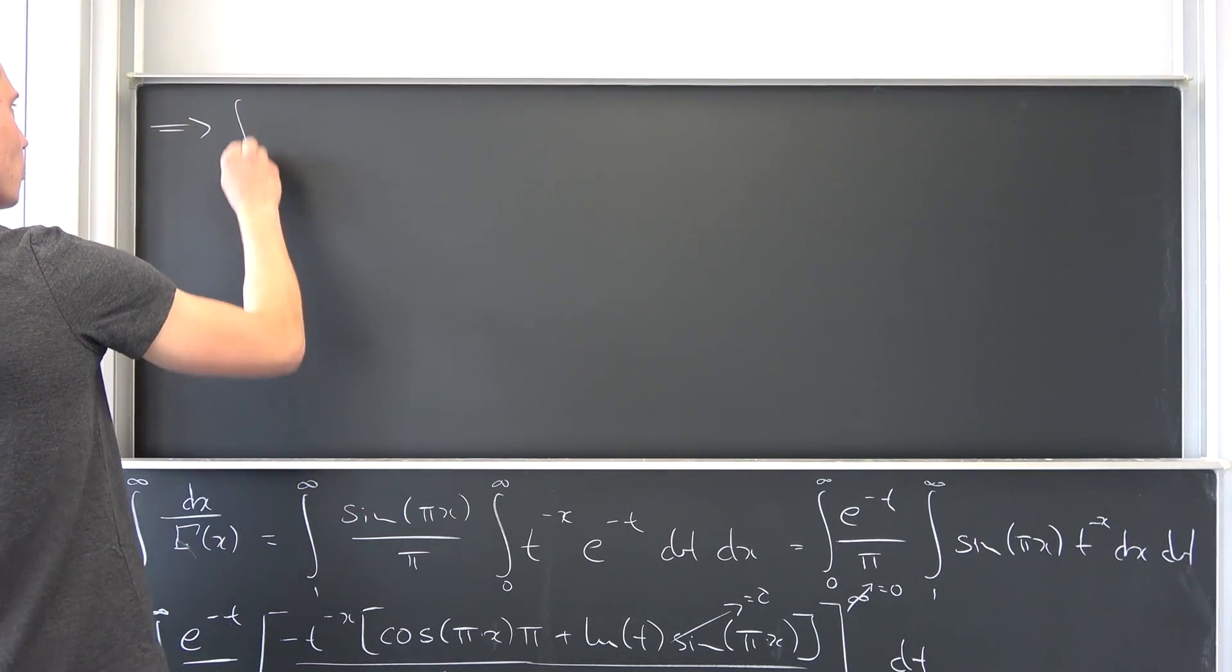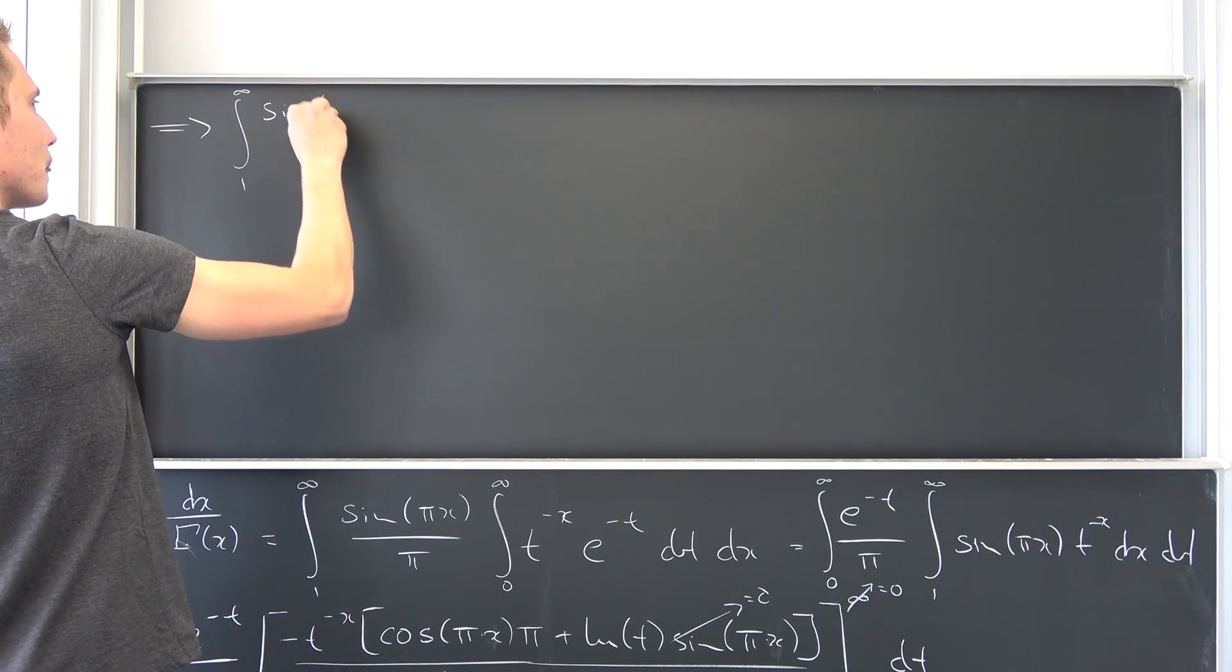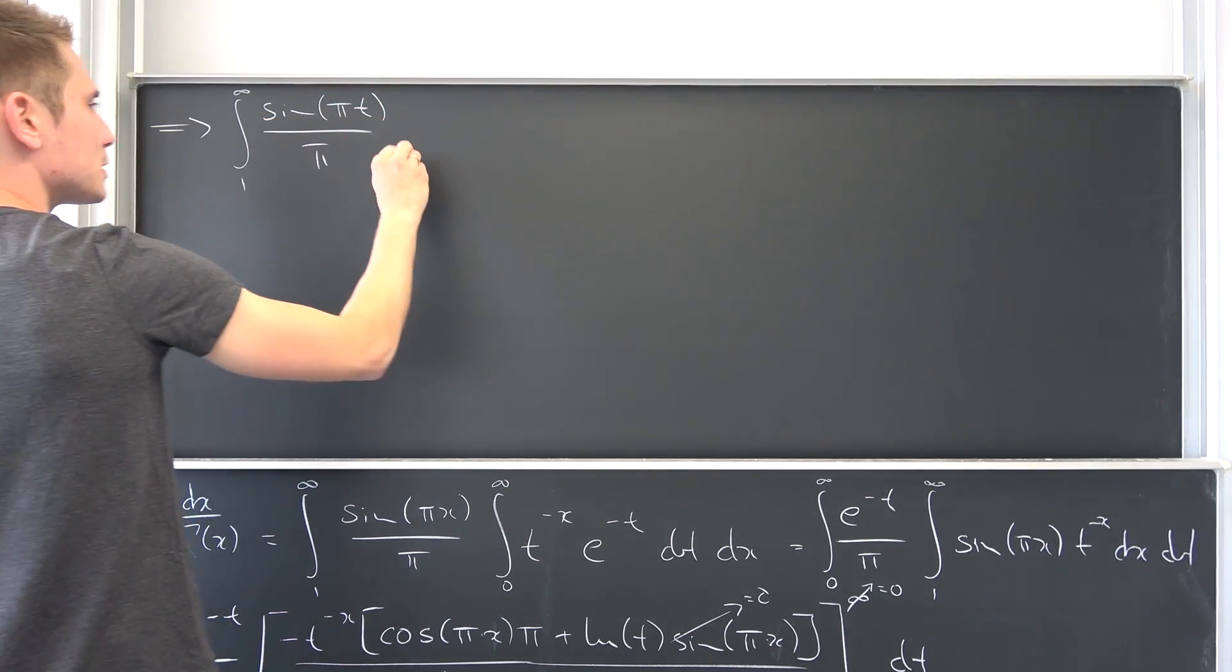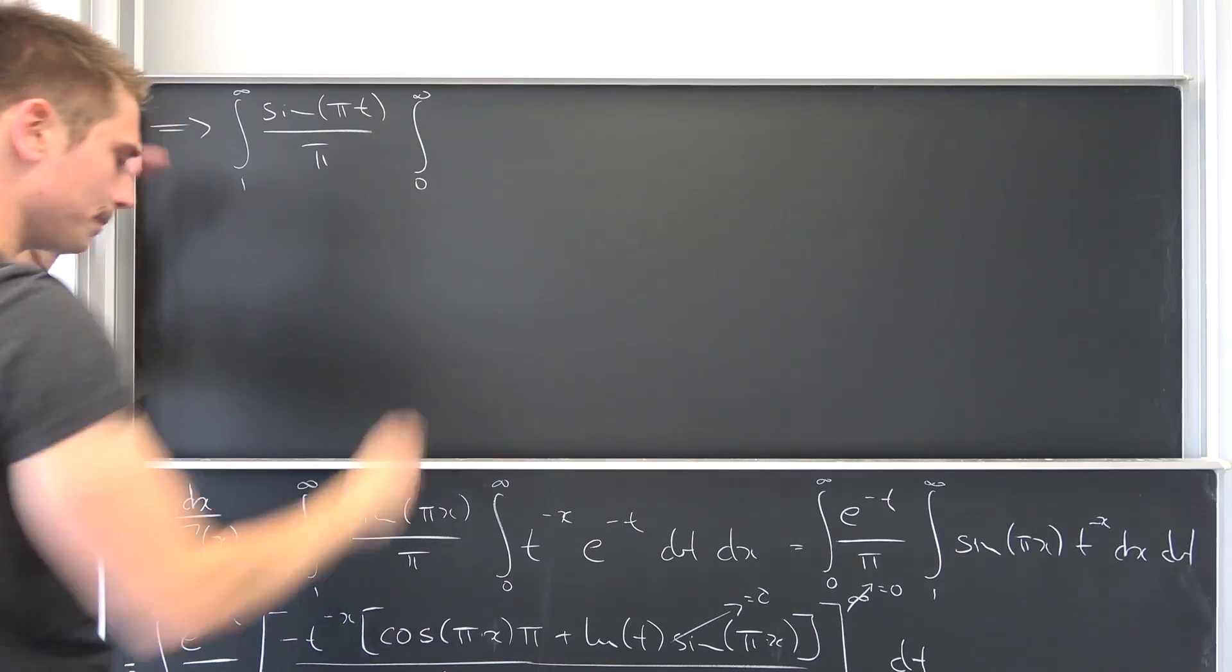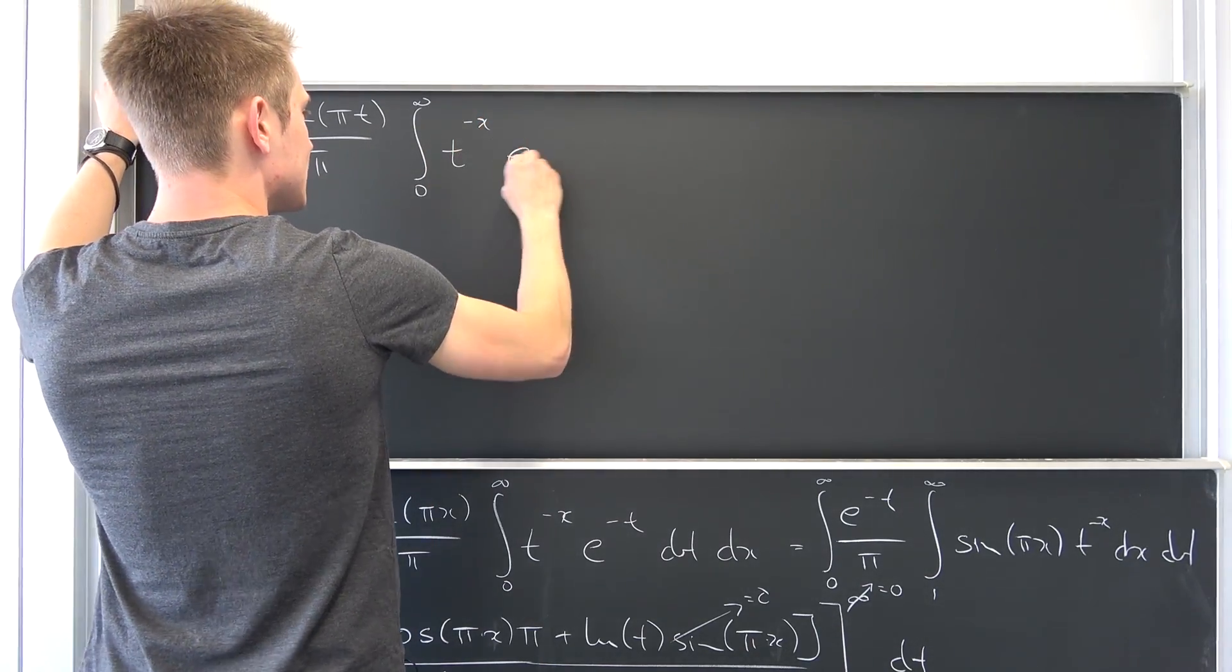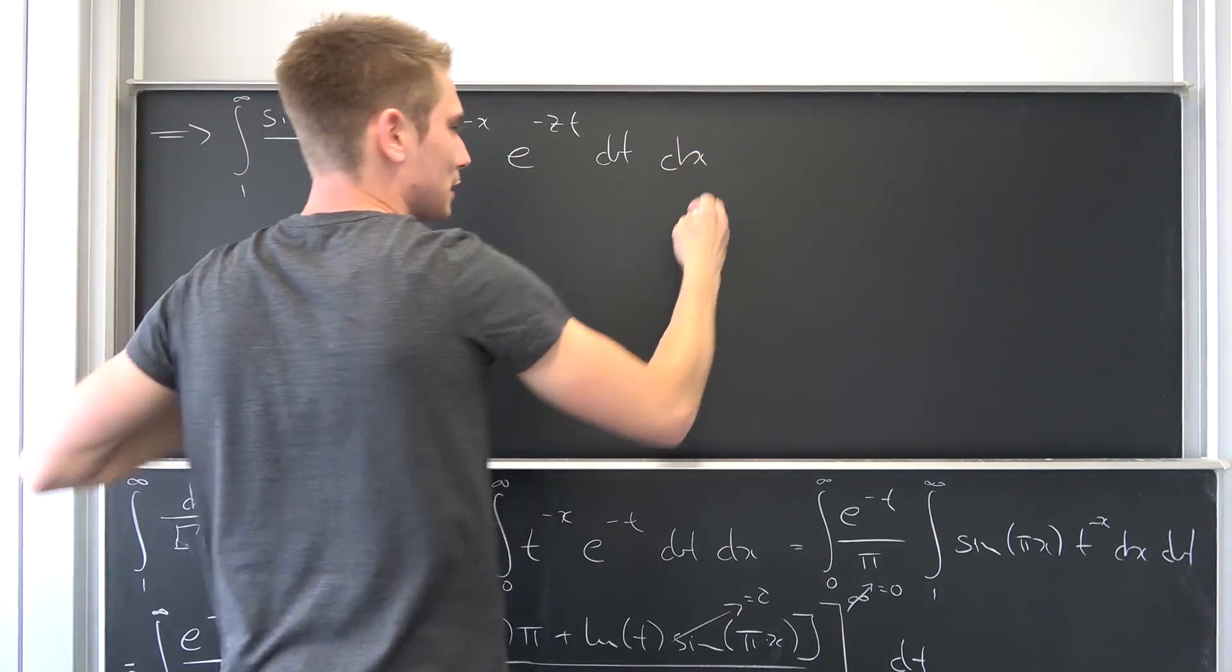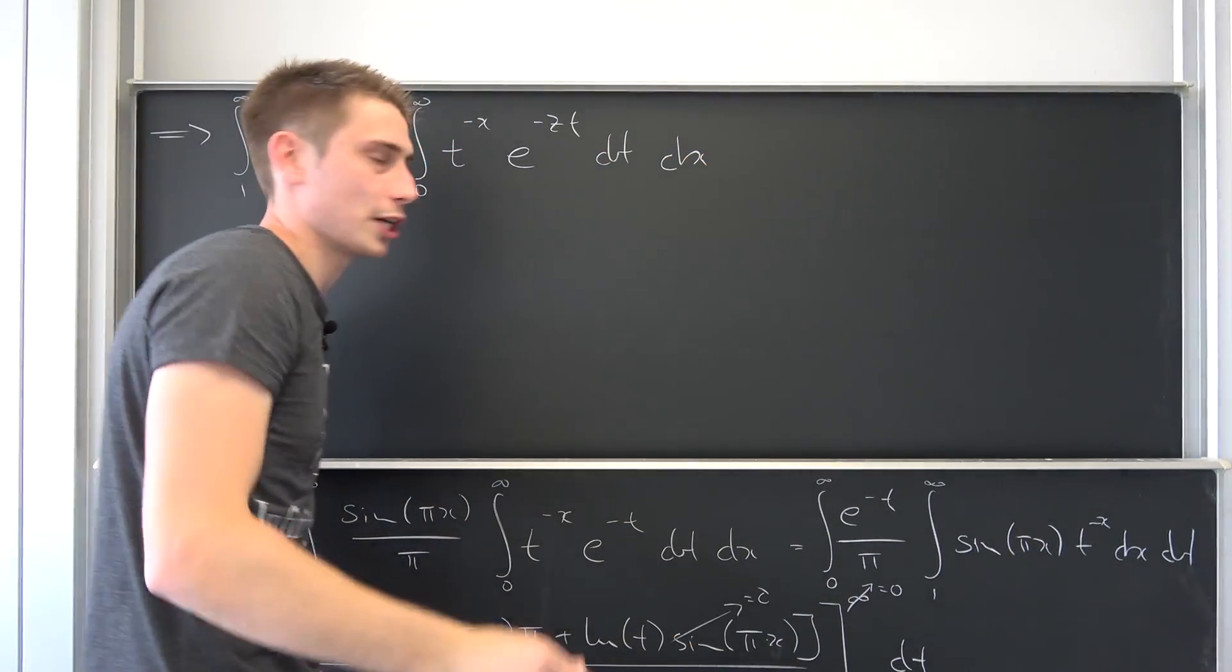Leaving us with an integral from one to infinity sine of pi times t over pi times an integral from zero to infinity of t to the negative x, e to the negative z times t. Integrate with respect to t and then with respect to x. Video brought to you by Harkarom and Schalke.